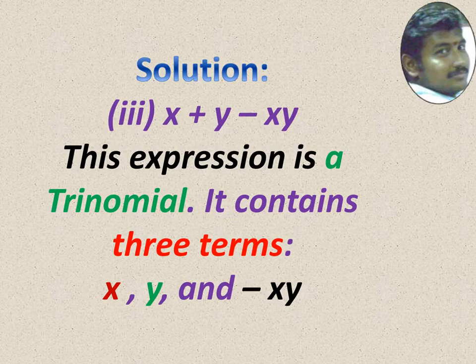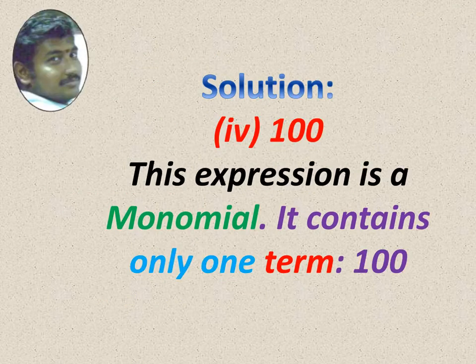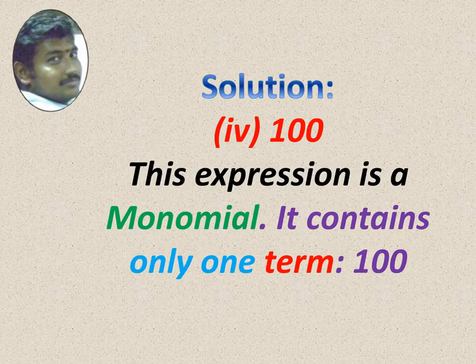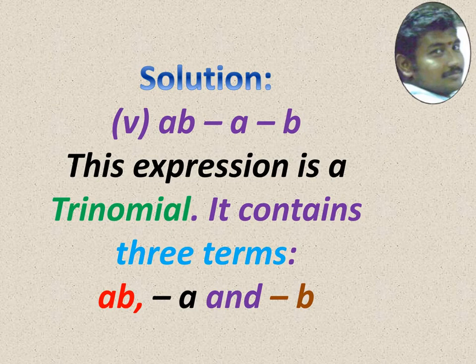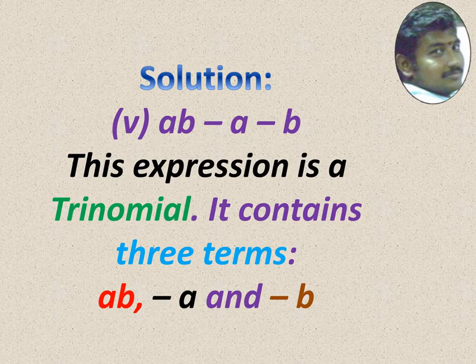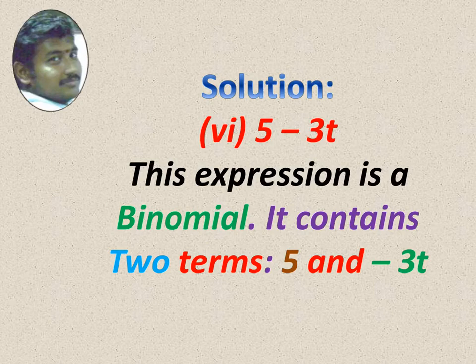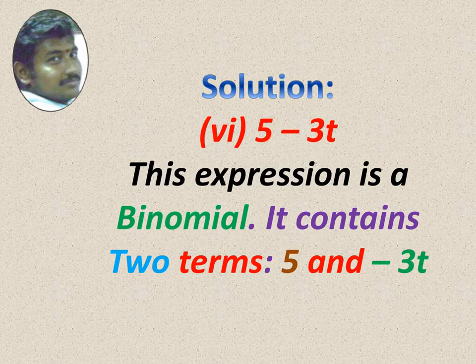100: just a constant, only one term, so this expression is a monomial. ab minus a minus b: all three are unlike terms — a, minus a... the three terms are ab, minus a, and minus b — so this is a trinomial. Phi minus 3t: phi is a constant and 3t includes a variable, two unlike terms, so this is a binomial. The terms are phi and minus 3t.